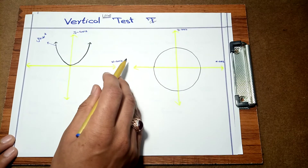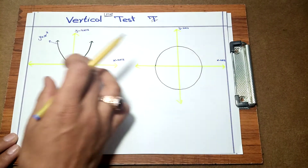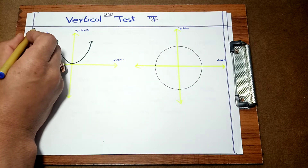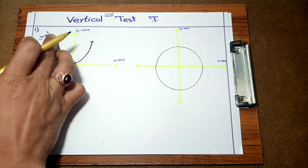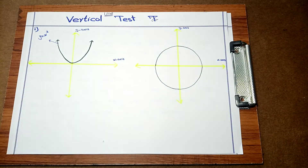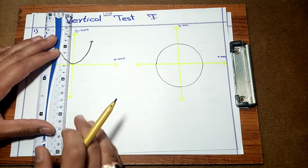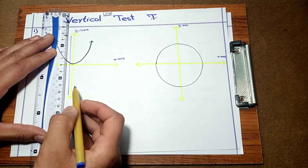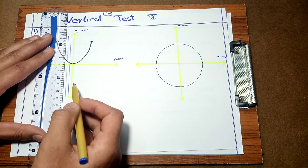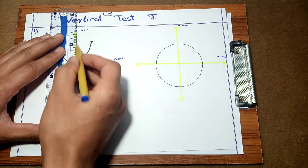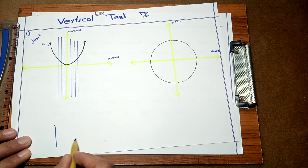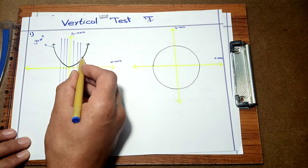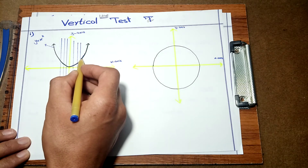There are two curves. We use the vertical line test to check whether each curve is a function or not. For example one: this is a curve in the XY plane, with the x-axis and y-axis shown. If I draw a vertical line here — a vertical line is this, and a horizontal line is this — we are using the vertical line on this curve.